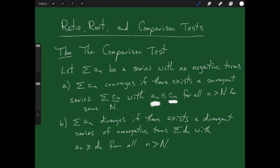Similarly, in part b, the series a sub n diverges if you can find a divergent series d sub n's, where the a sub n's are always bigger than the d sub n's. If the series d sub n diverges, then the series a sub n diverges. In other words, if the little guy diverges, then the big guy diverges. If the smaller one is infinite, then obviously the bigger one is infinite as well.